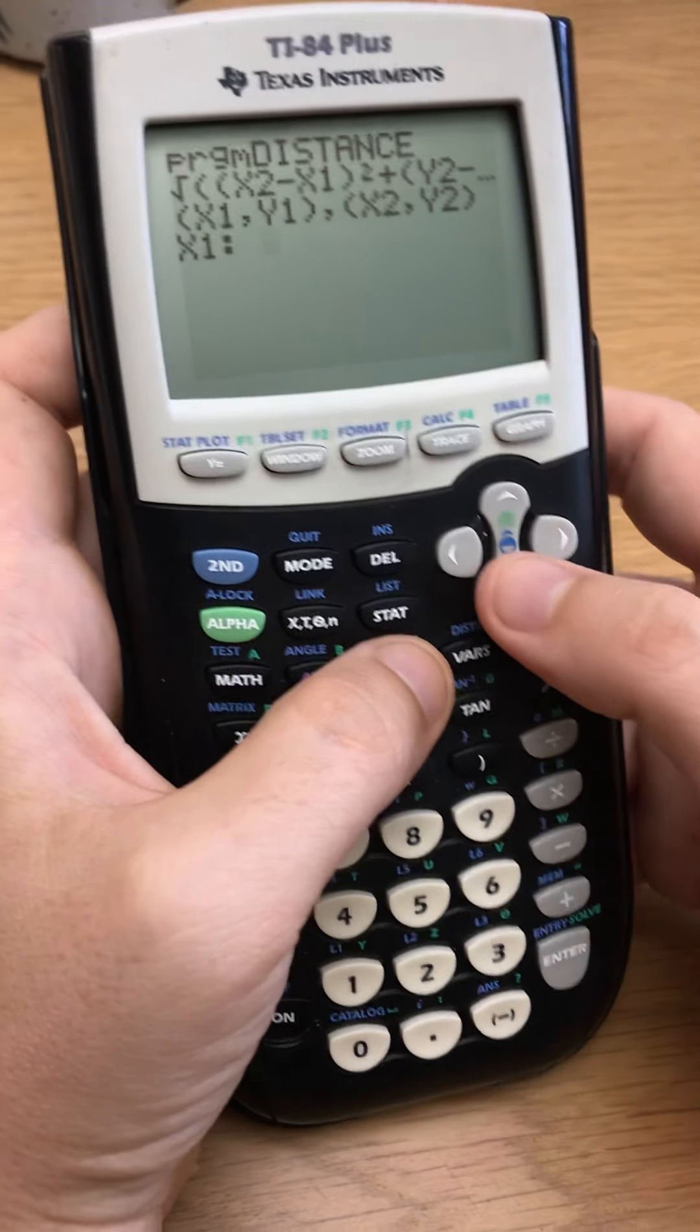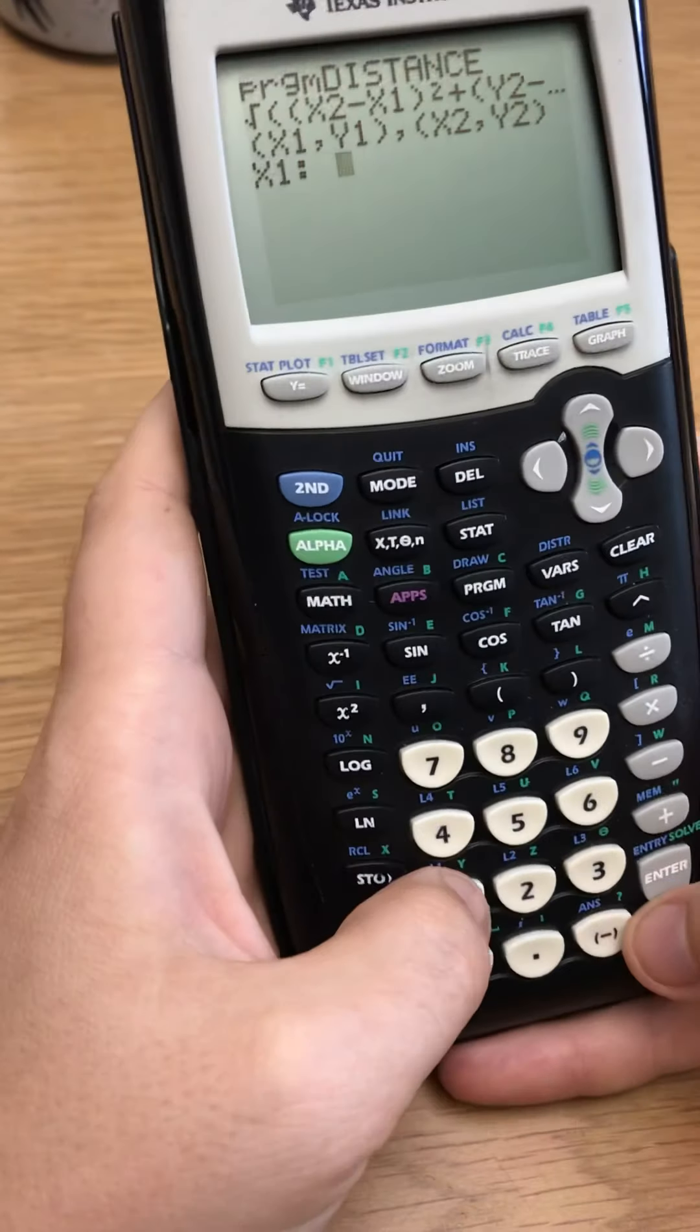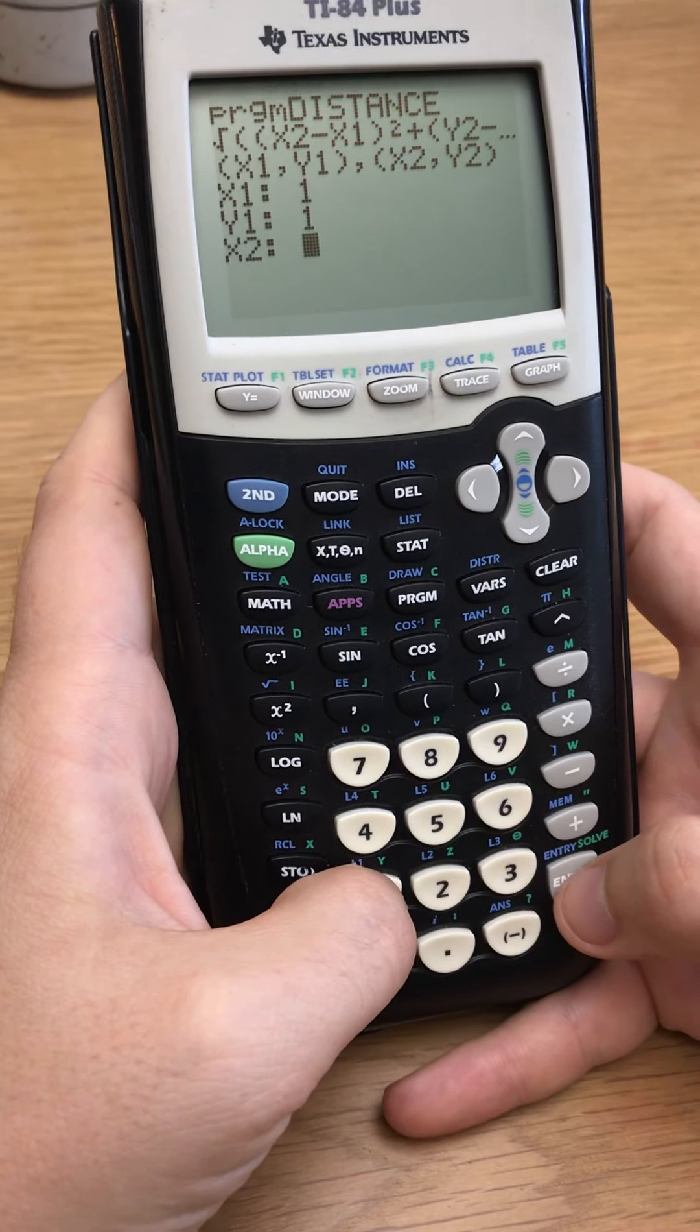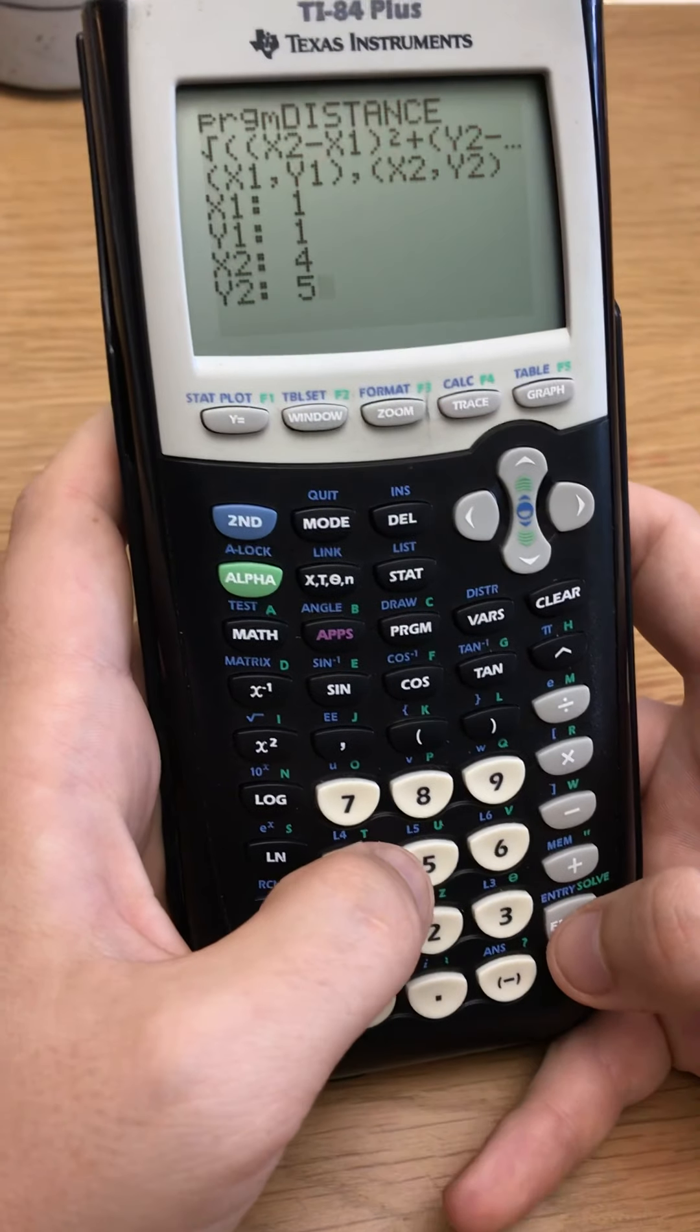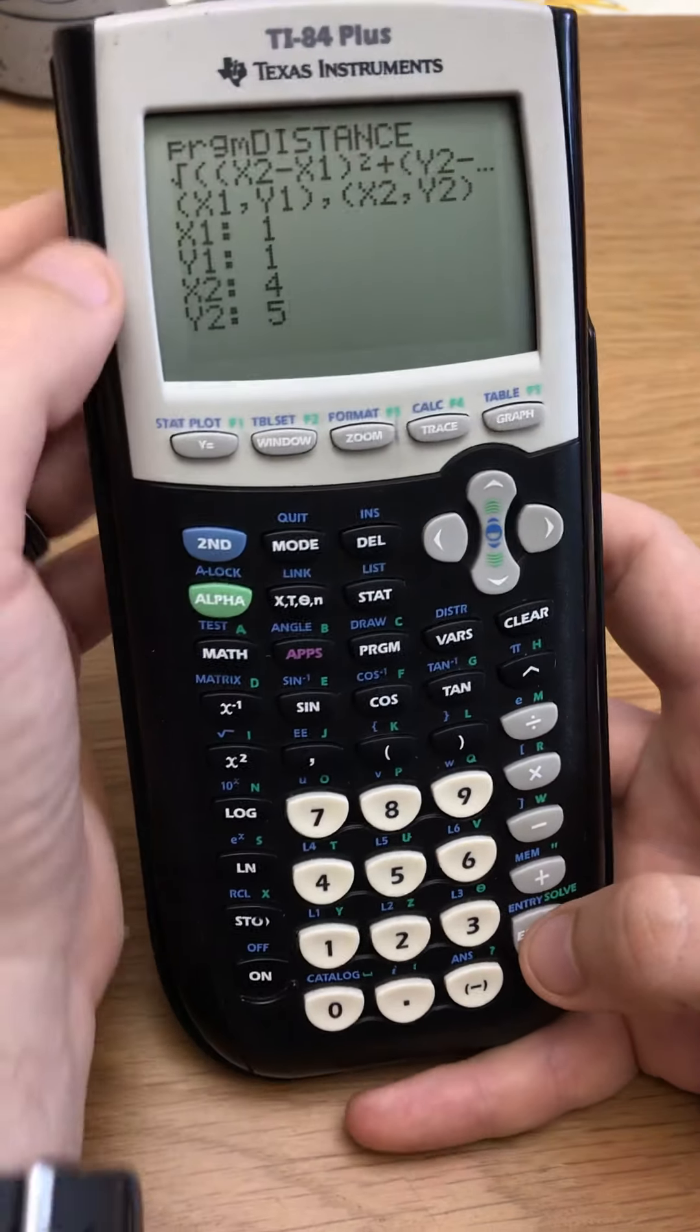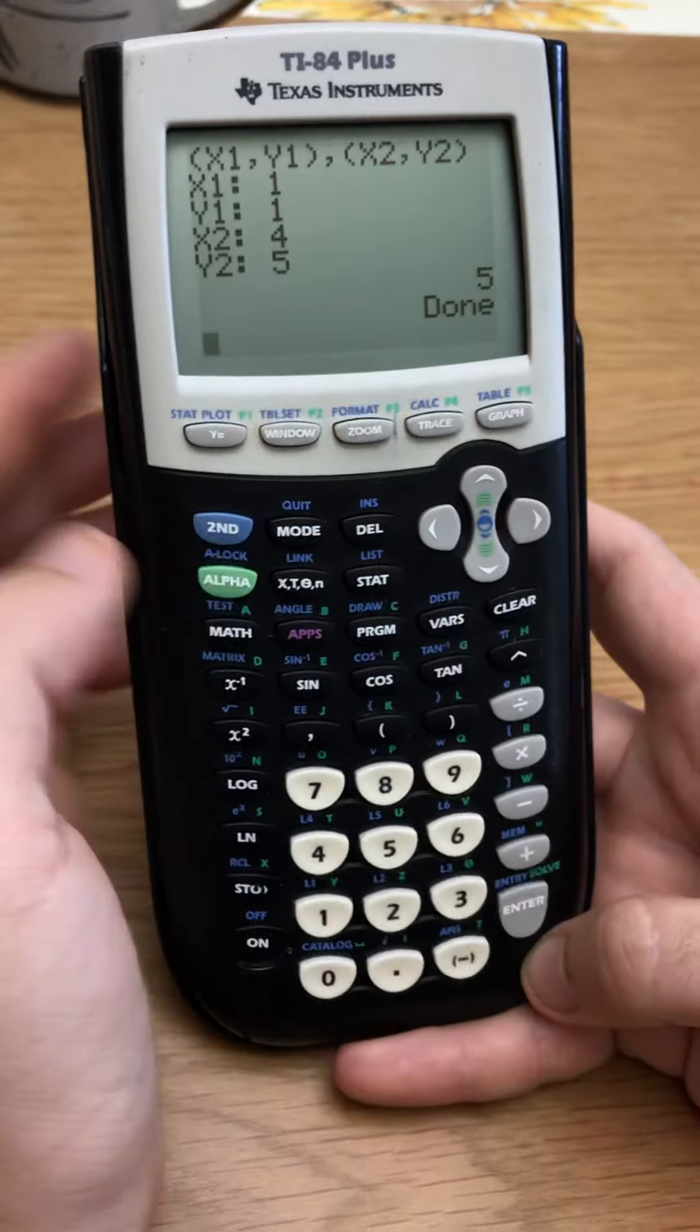But you definitely need your inputs, which is what I have here. So x1, let's say x1 is 1, y1 is 1. So that would be the point 1, 1. Then for my other point, let's say I do 4, 5. So the distance between those points is actually 5 and that's what's going to happen when I press enter here. So that would be 1, 1, 4, 5, hit enter one more time, boom, spits out the answer and then it says it's done.